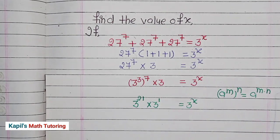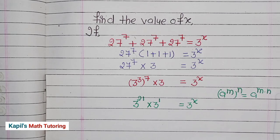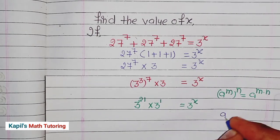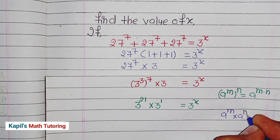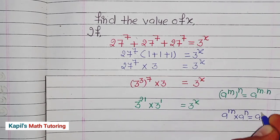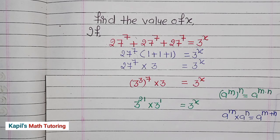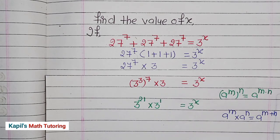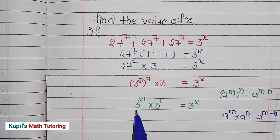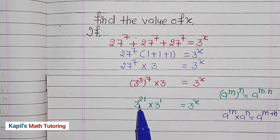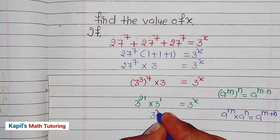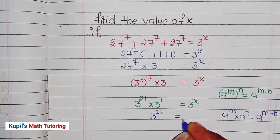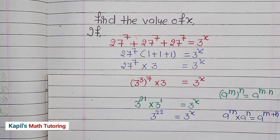Another exponential property: when a to the power m multiplied by a to the power n, this equals a to the power m plus n — when bases are the same, we add the powers. So 3 to the power 21 multiplied by 3 to the power 1 gives us 3 to the power 22, equals 3 to the power x.